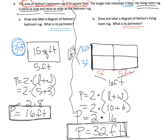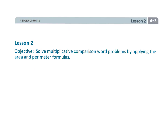So to recap: draw and label the living room rug — it's twice as wide and twice as long. The perimeter is thirty-two feet. And that wraps up fourth grade module three, lesson two, where we continue talking about area and perimeter.